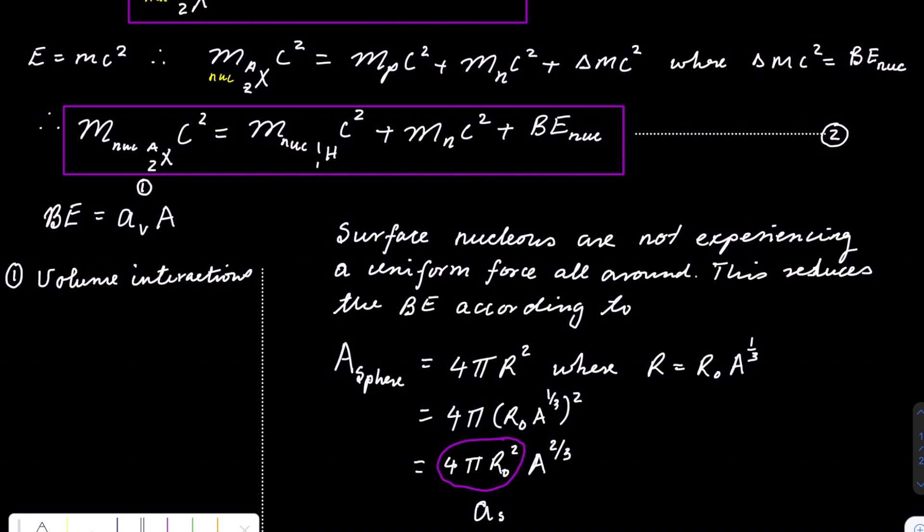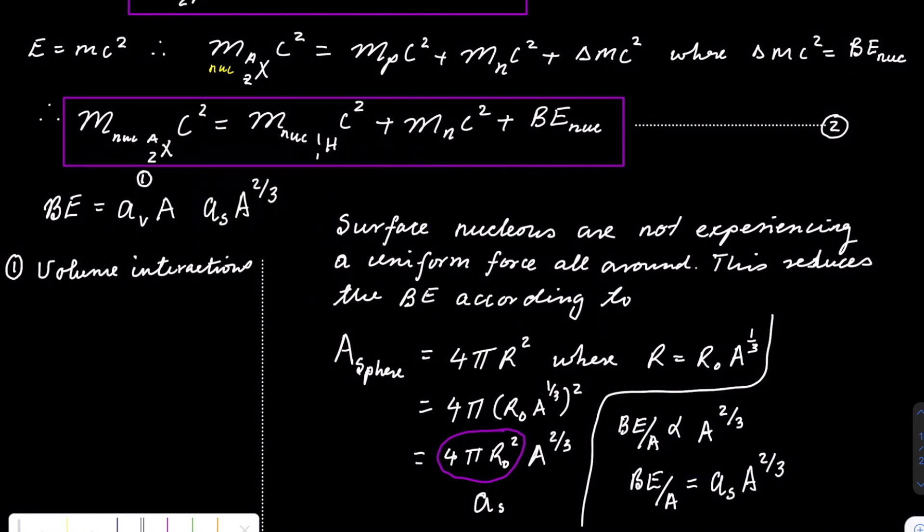And therefore, this will give us the second term of the binding energy formula, which is negative as it reduces the binding energy, and it corrects the surface interactions.